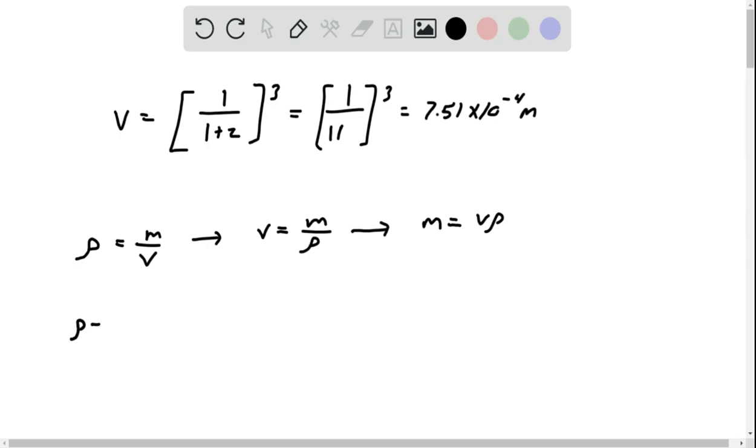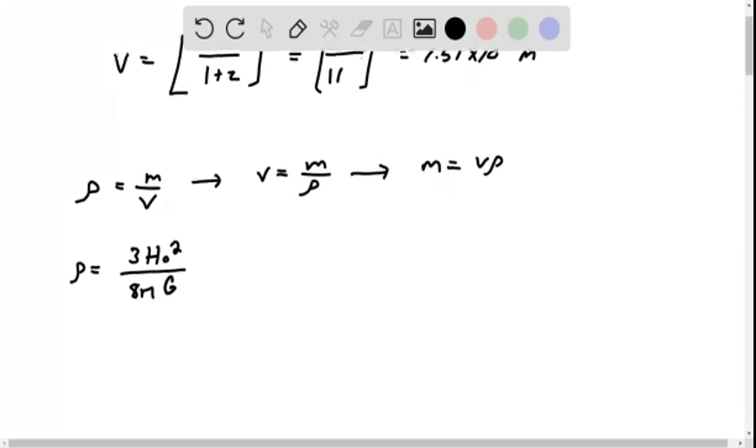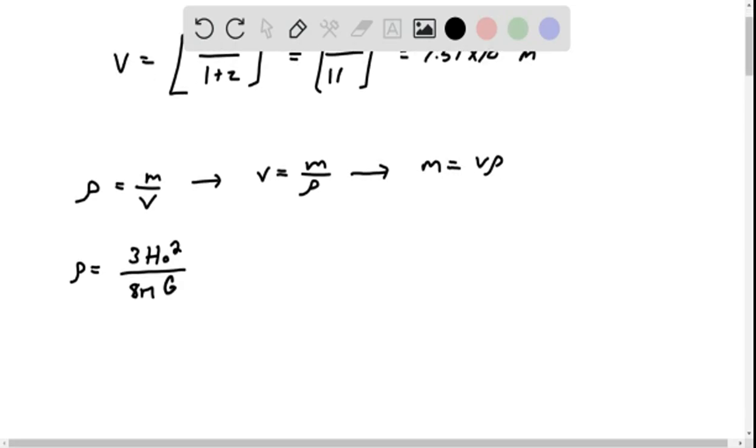Density is also given as 3 Hubble squared divided by 8 pi G. From this, we have m equals 7.51 times 10 to the negative 4 m, which is what we just found above, and it's cubed.